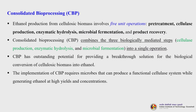Consolidated bioprocessing (CBP) addresses the five unit operations in cellulosic ethanol production: pretreatment, cellulase production, enzymatic hydrolysis, microbial fermentation, and product recovery. CBP combines the three biologically mediated steps — cellulase production, enzymatic hydrolysis, and microbial fermentation — into a single operation, with pretreatment and product recovery remaining separate. CBP has outstanding potential for breakthrough solutions in the biological conversion of cellulosic biomass into ethanol, requiring microbes that can produce a functional cellulase system while generating ethanol at high yields and concentrations.